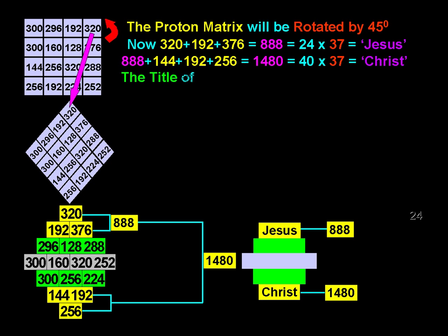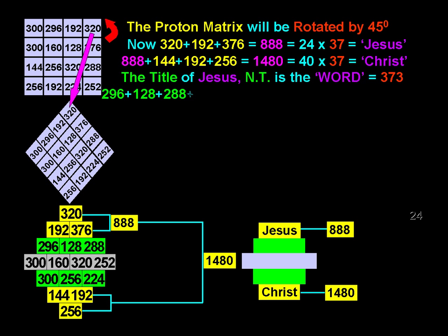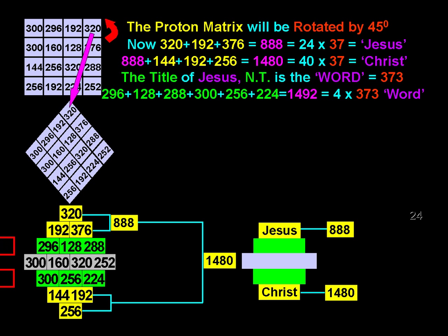The title of Jesus in the New Testament is 'the word', with a value of 373. Therefore, 296 plus 128 plus 288 plus 300 plus 256 plus 224 is 1492, which is 4 by 373, the value of Christ.